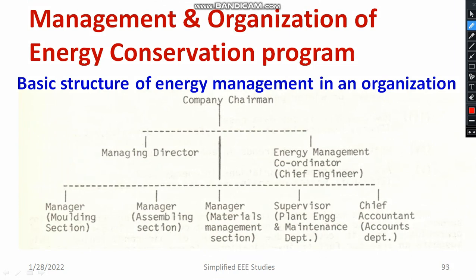The company chairman is the top authority in a particular organization. Under the company chairman, you can see the managing director and another important person, that is the energy management coordinator. The energy management coordinator is also known as the chief engineer. The chief engineer is a single person, and under the chief engineer there are different managers working.